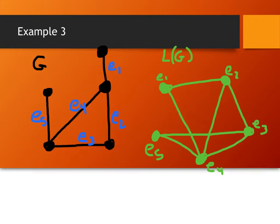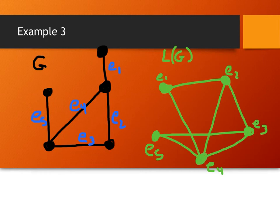Let me double-check: edge 1 connected to 2 and 4 — good. Edge 2 connected to 1, 4, 3 — good. Edge 3 connected to 2, 4, and 5 — good. Edge 4 connected to 1, 2, 3, and 5 — good. Edge 5 connected to 3 and 4 — good. So that's the line graph for this graph.